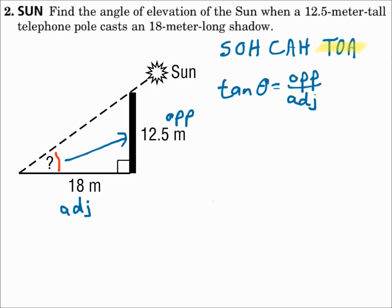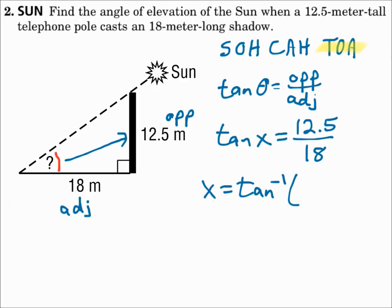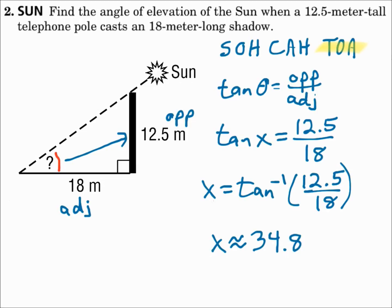Tangent theta equals opposite over adjacent. Substitute in: theta is what I'm looking for, so that'll be x. Opposite is 12.5, and adjacent is 18. Since I'm looking for the angle measure, I've got to get rid of tangent, so do the inverse function. X equals arc tangent of 12.5 over 18. When you punch that in, x is approximately 34.8 degrees. Is that a logical answer? Sure — that could be a 34.8 degree angle.